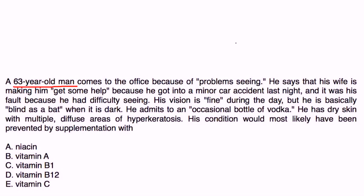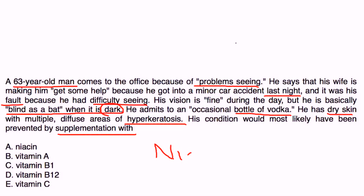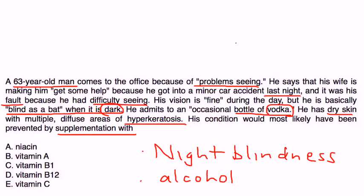A 63-year-old man comes to the office because of a problem seeing. His wife is making him get help because he got into a minor car accident last night — his fault because he had difficulty seeing. His vision is fine during the day but he's basically blind in the dark. He admits to an occasional bottle of vodka. He has dry skin and multiple diffuse areas of hyperkeratosis. He's got the night blindness, which is characteristic, and the vodka suggests alcohol-related absorption problems causing vitamin A deficiency. The answer is choice B, vitamin A.